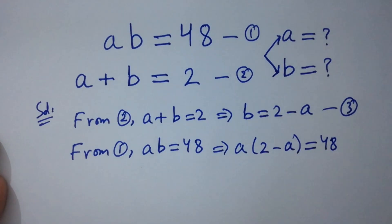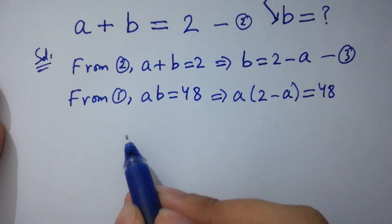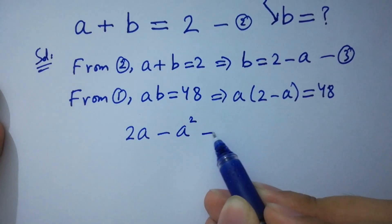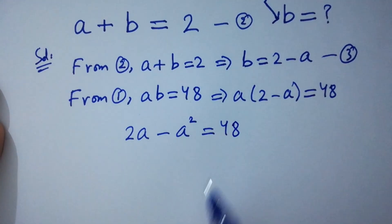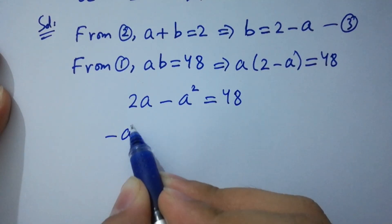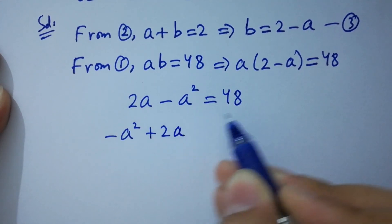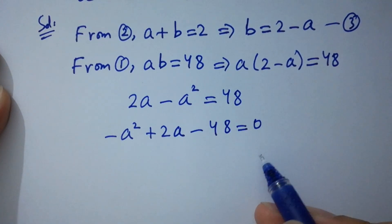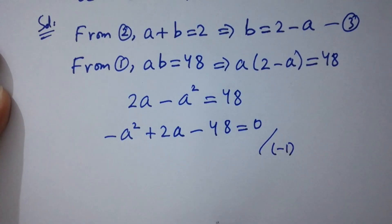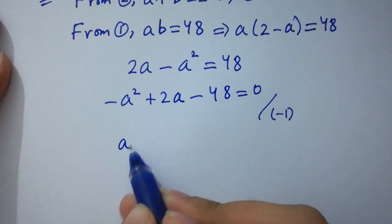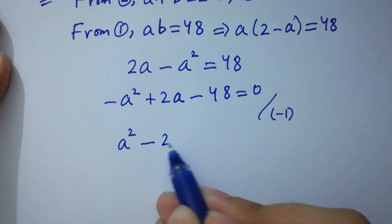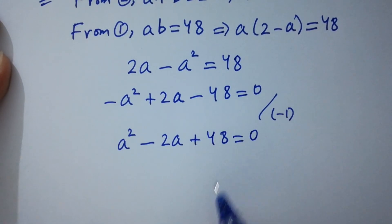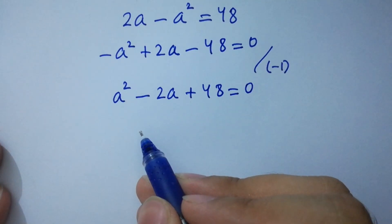From the first equation ab equal to 48, put the value of b: a times (2 minus a) equal to 48. Simplifying: 2a minus a square equal to 48, which gives minus a square plus 2a minus 48 equal to 0. Divide by minus 1 on both sides: a square minus 2a plus 48 equal to 0. This is a quadratic equation.